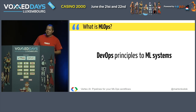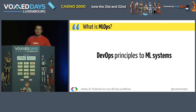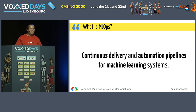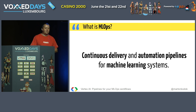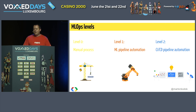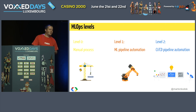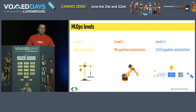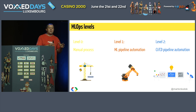We are going to see what MLOps is in a couple of sentences: applying DevOps principles to machine learning systems, or continuous delivery and automation pipeline for machine learning systems. The industry has two levels of automation. One is the manual process — I call that level zero, because any process has a manual step. Then there is pipeline automation, and there is CI/CD pipeline automation. Pipelines are the roots for your automation problems.